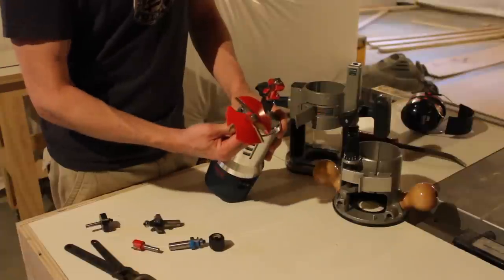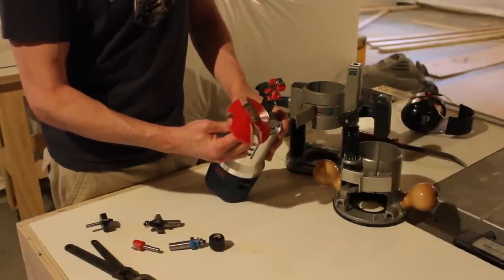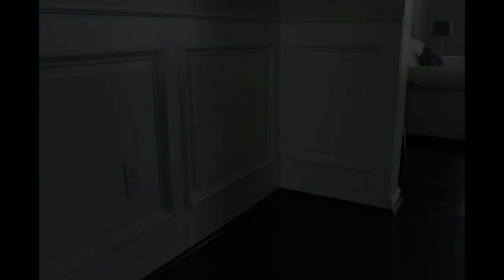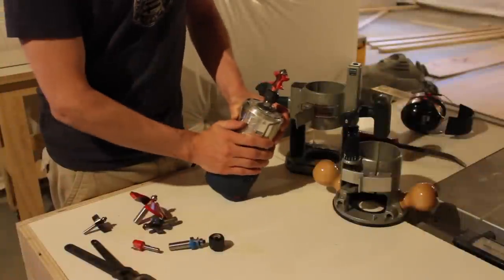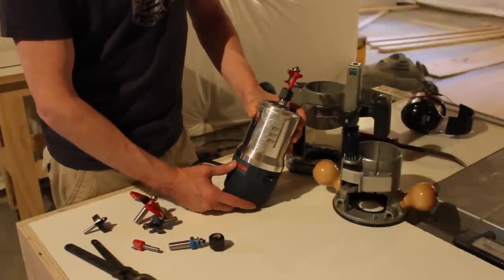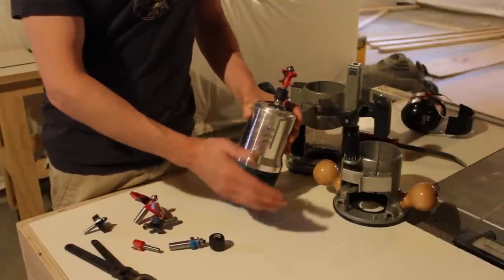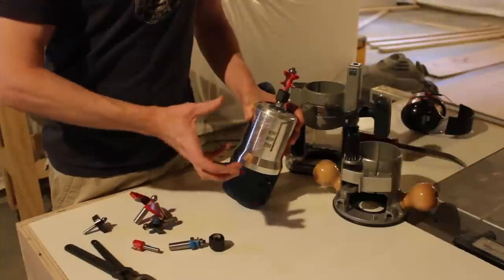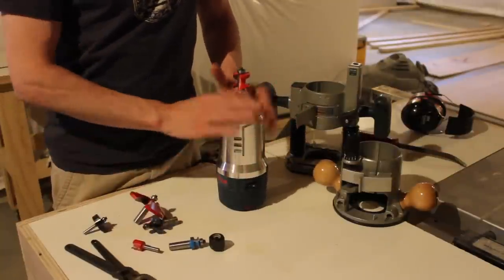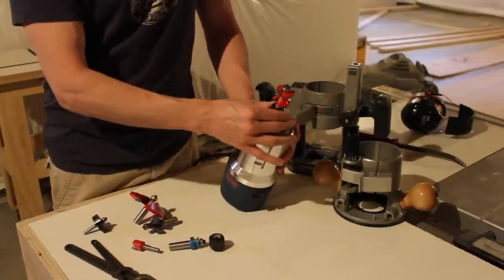This router bit, which is a raised panel bit, I'd probably use a two or a three on it. If you buy a router that doesn't have a speed control and you need it for various bits, then you can put in some type of speed control device between the outlet and the power cord that lets you dial down the voltage going to the router.